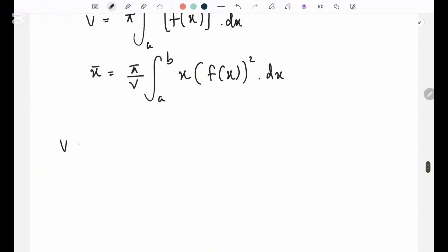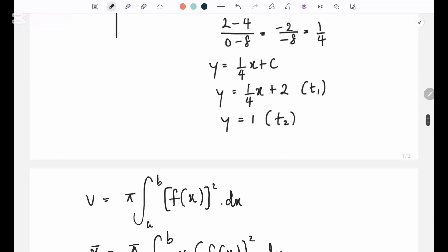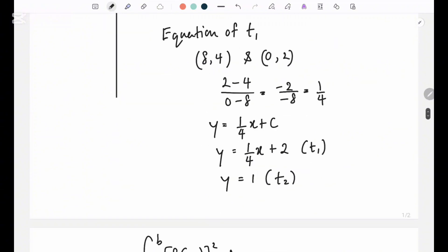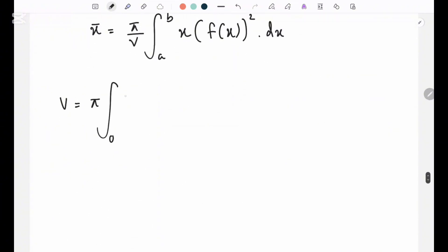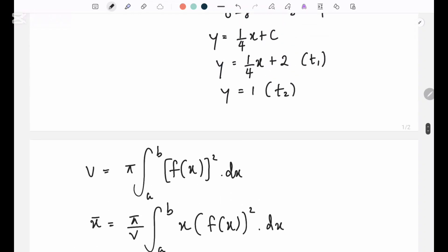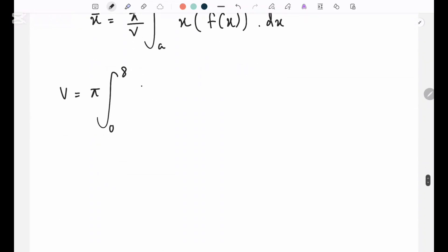So when finding the volume under y equals 1, we'll have to subtract it from the other volume, the total volume we get. So this is how we do it. Let's go for the volume. So volume equals pi, what's the integral? 0 to 8. This is the origin, 0 to 8, and we have 1 over 4x plus 2 squared minus 1 squared.